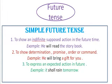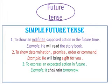Next we come to future tense. Simple future tense: something jo aage hone wala hai. It shows an indefinite supposed action in the future. Like: 'He will read the story book.' Present mein hoga 'He reads the story book,' past mein hoga 'He read the story book,' and future mein hoga 'He will read the story book.'